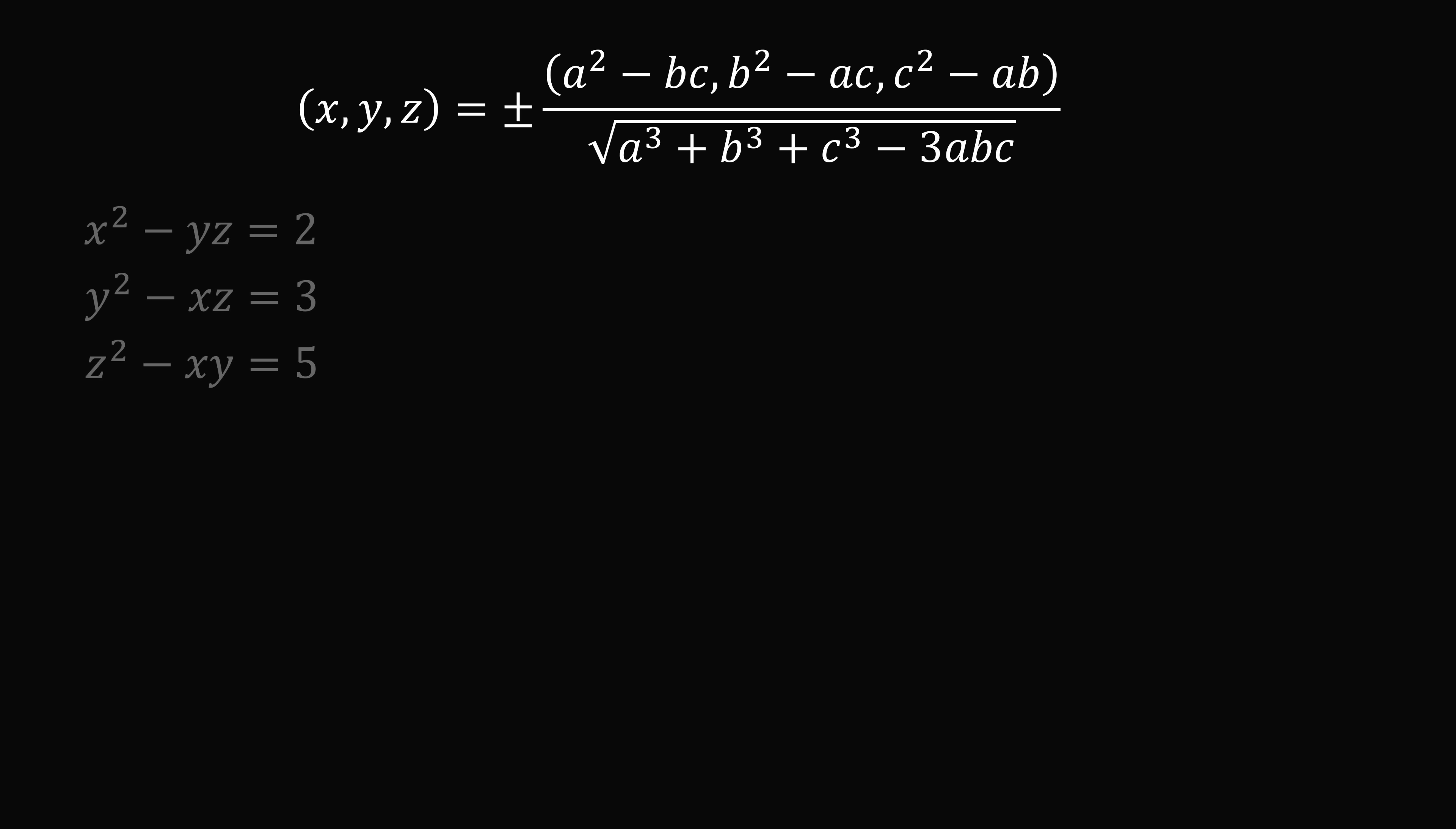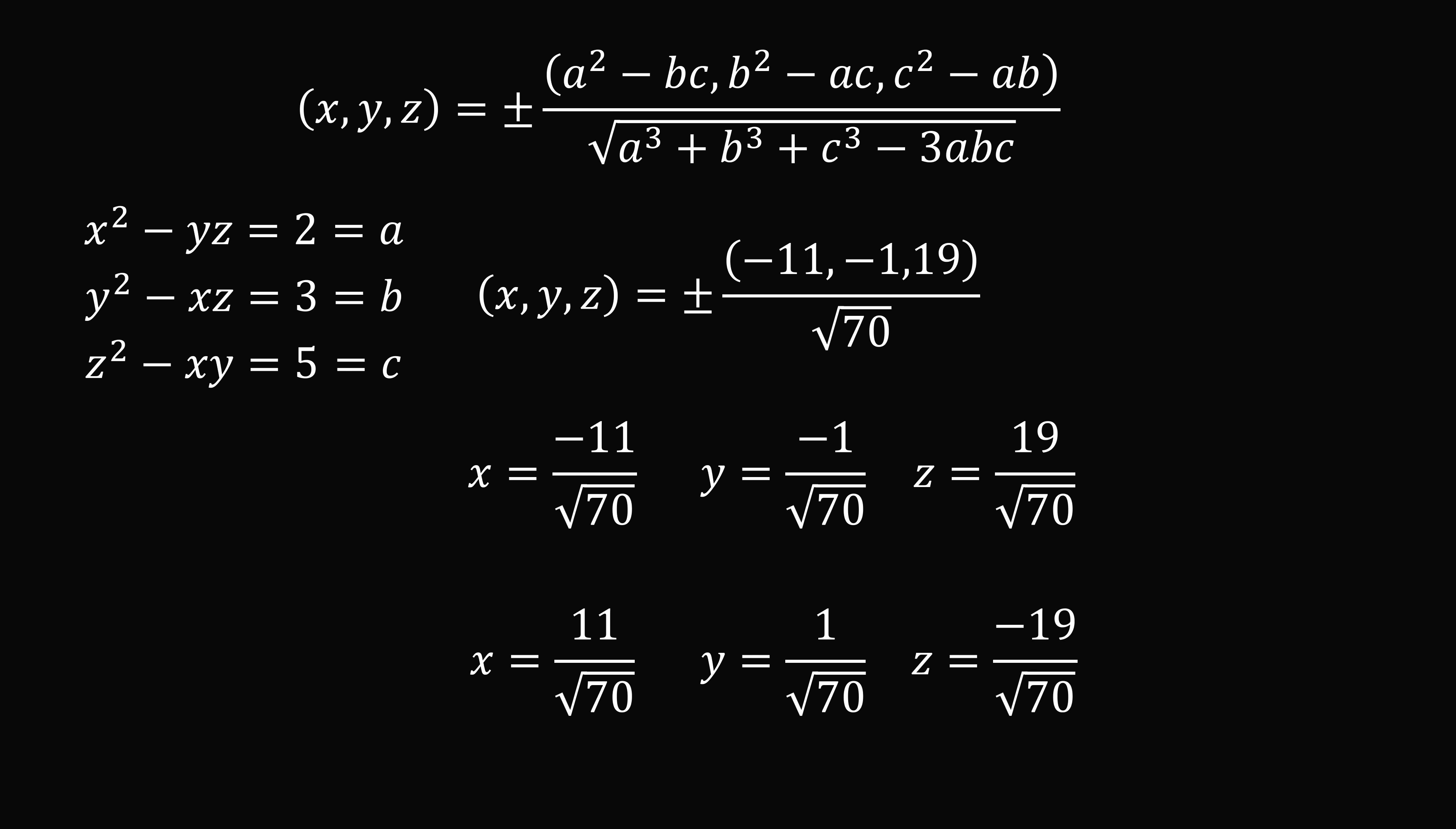In our original problem, we had a equals 2, b equals 3, and c equals 5. We simply substitute in those values into our equation. We get the triple of x, y, and z. We get two possible solutions. Either x equals negative 11 over root 70, y equals negative 1 over root 70, and z equals 19 over root 70, or the opposite of these: x equals 11 over root 70, y equals 1 over root 70, and z equals negative 19 over root 70. We have two solution sets, and that's the answer.